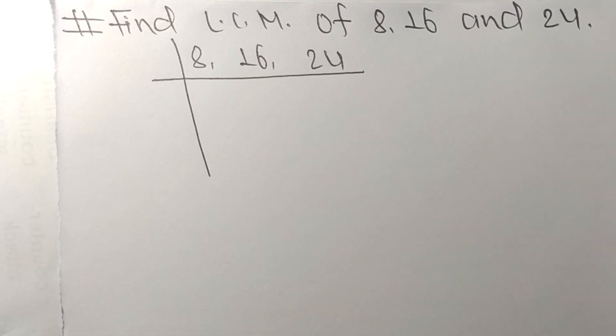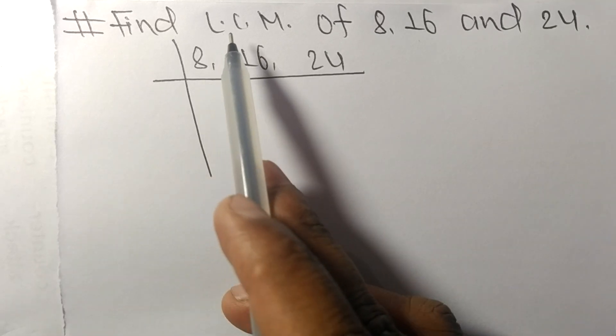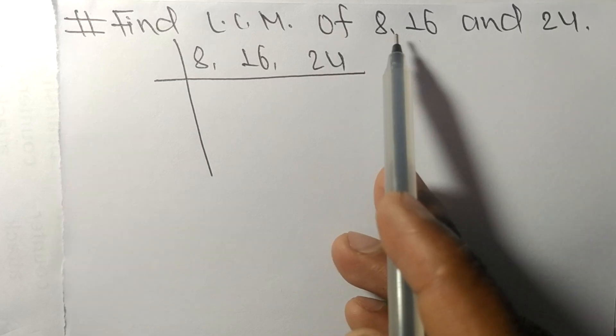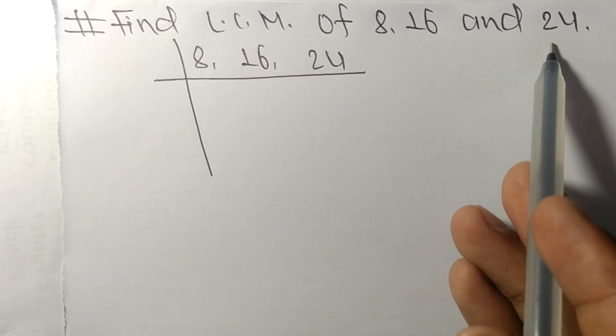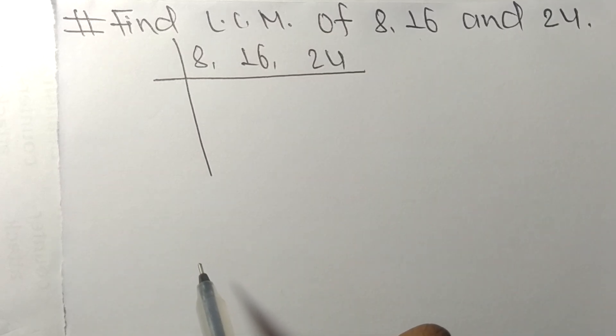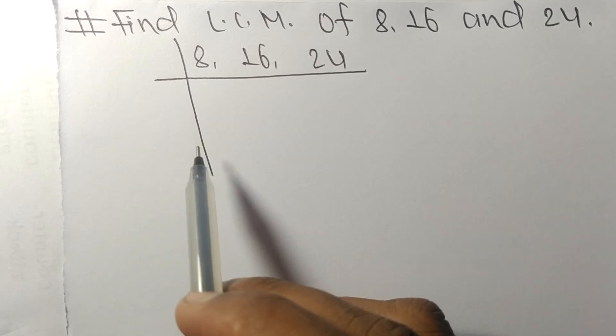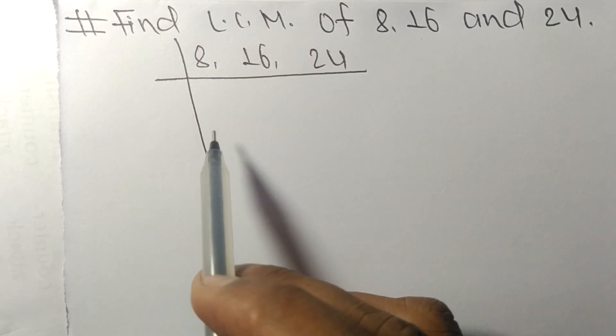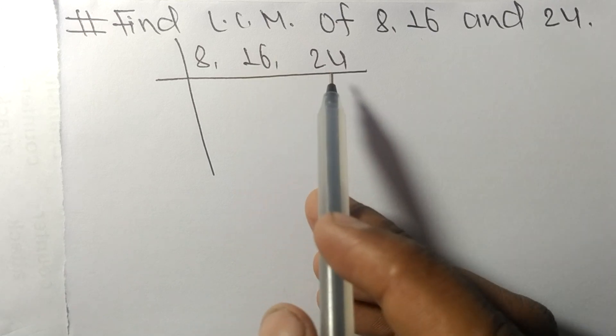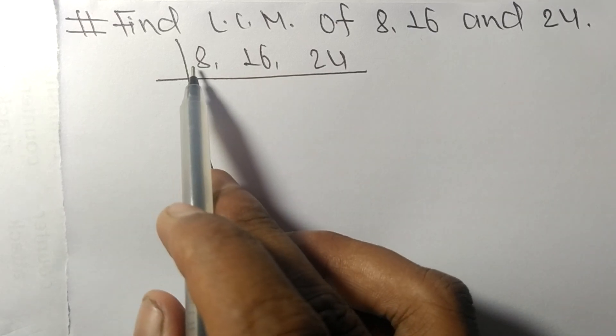So today in this video we shall learn to find the LCM of 8, 16, and 24. To find LCM we have to choose the lowest number that can exactly divide any two of these numbers.